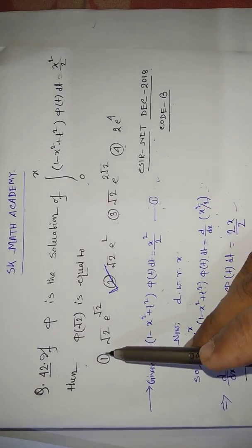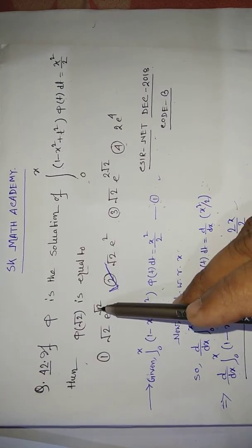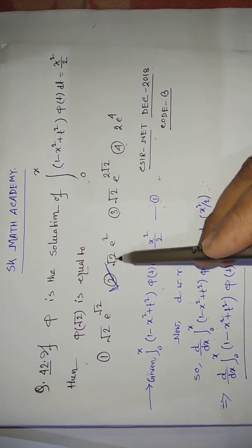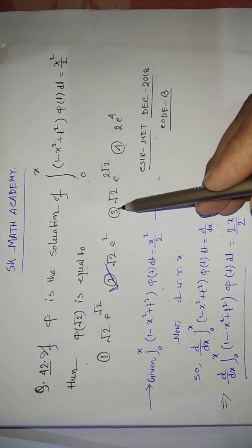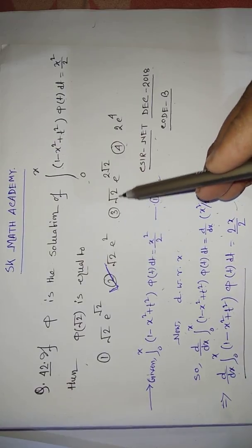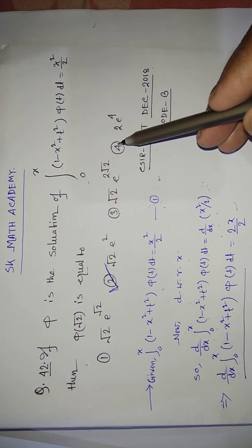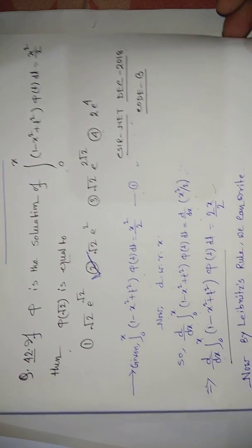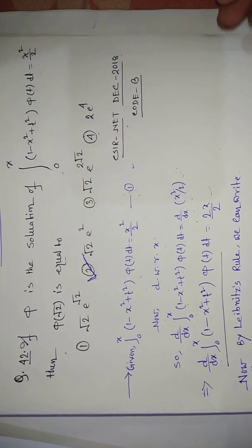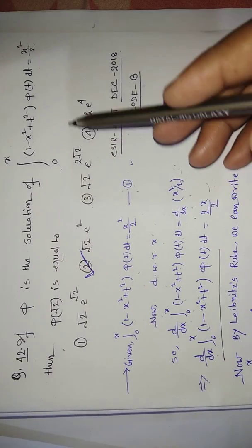Option 1: √2·e^(√2). Option 2: √2·e². Option 3: √2·e^(2√2). Option 4: 2e^4. Now, from the given equation, we proceed by differentiating with respect to x.